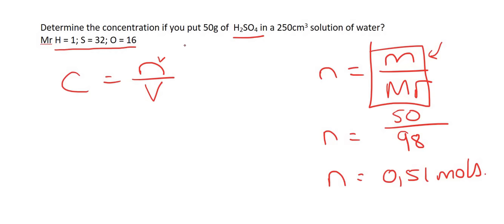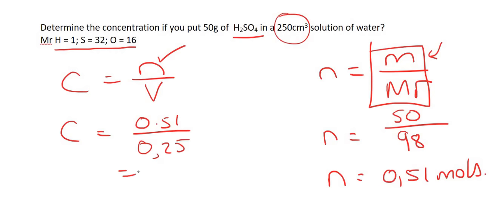Now we have the number of moles, which is 0.51. The volume is in cm³, so divide by 1000, giving 0.25 dm³. If you divide 0.51 by 0.25, you get an answer of 2.04 mol·dm⁻³.